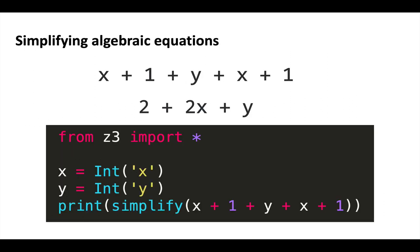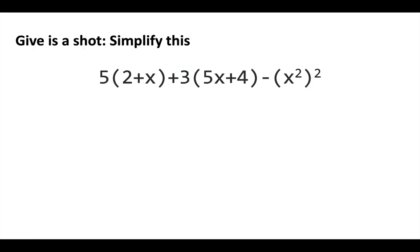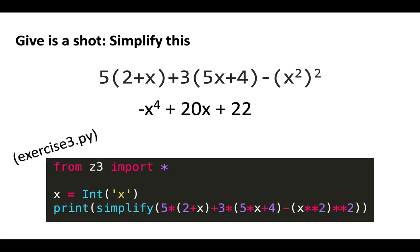We can also simplify algebraic equations with Z3. For example, X plus 1 plus Y plus X plus 1 simplifies to 2 plus 2X plus Y, using the simplify function. Give this a shot yourself. The simplified form is produced using the simplify function — since we only have one variable, we use int instead of Ints to declare X. Passing the full expression into simplify produces negative X to the fourth plus 20X plus 22. Keep in mind that in Python, two asterisks represent the power and the caret represents XOR.